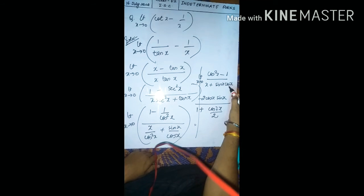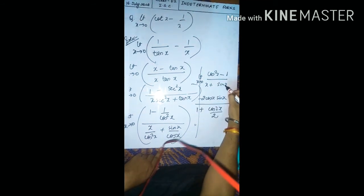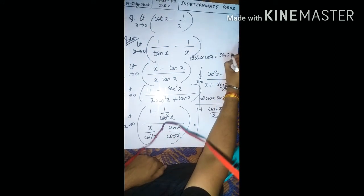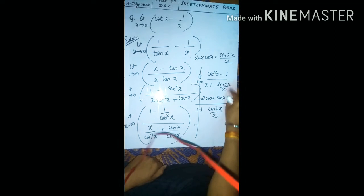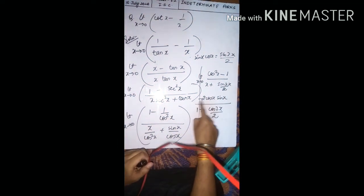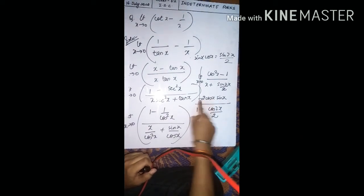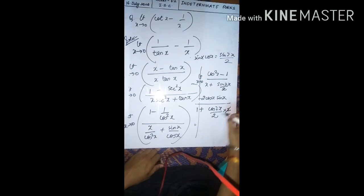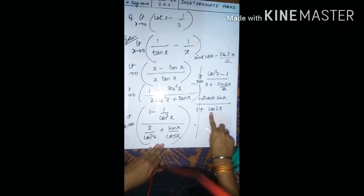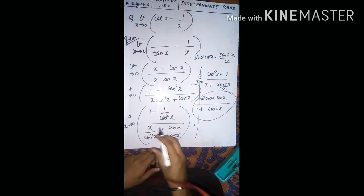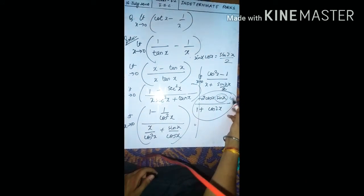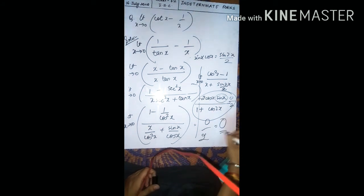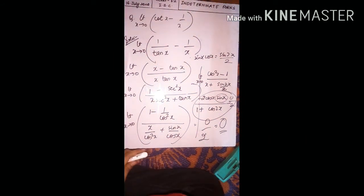We still get 0/0 form on substitution, so we differentiate again. Writing sin(x)·cos(x) = sin(2x)/2, the numerator differentiation of cos²(x)-1 gives -2sin(x)cos(x) = -sin(2x), and the denominator becomes 1 + cos(2x)/2·2 = 1 + cos(2x). Putting x→0: numerator → 0, denominator → 1 + cos(0) = 1 + 1 = 2. So 0/2 = 0 is the final answer.